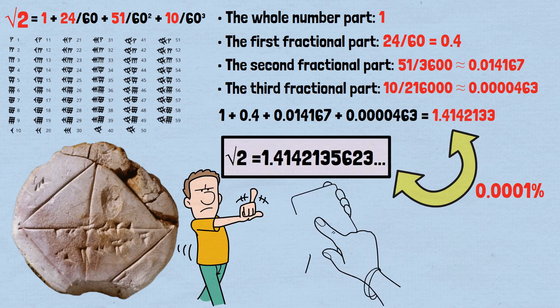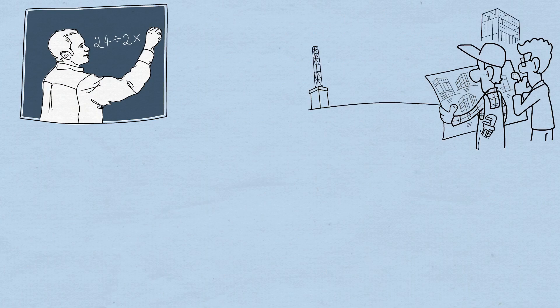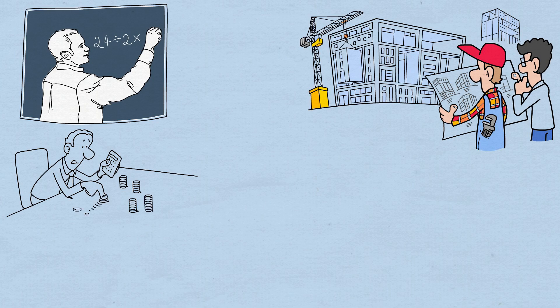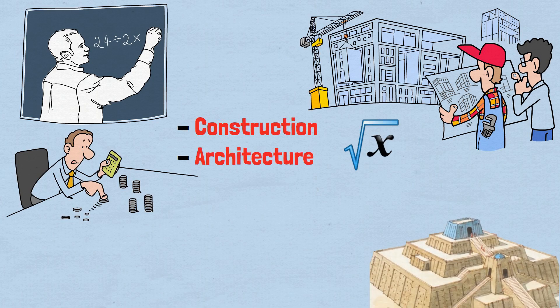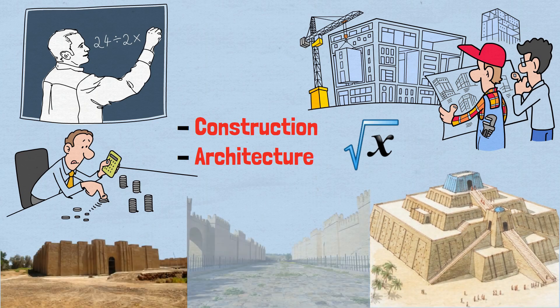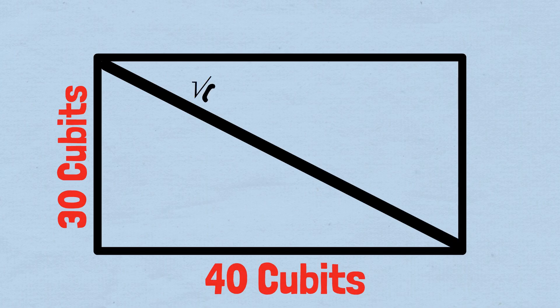The Babylonians didn't calculate square roots as an academic exercise — their civilization had practical needs requiring precise mathematical calculations. For example, Babylonian builders constructed massive ziggurats, temples, and city walls that required precise measurements. When building a rectangular structure, they often needed to know the diagonal length for bracing and stability. If a room measures 30 cubits by 40 cubits, the diagonal measures √(30² + 40²) = √2500 = 50 cubits exactly.